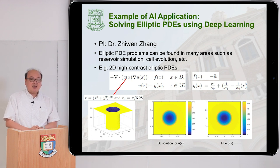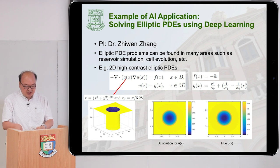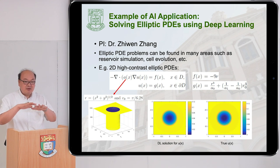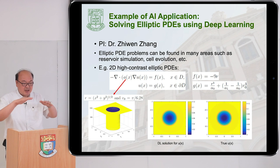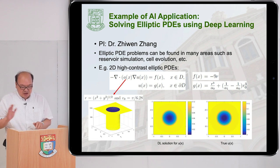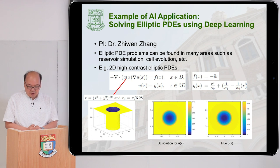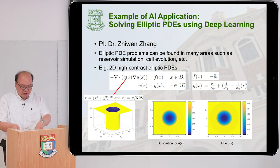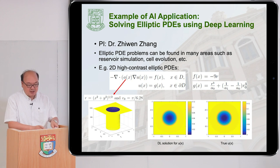This is an application of deep learning to solve elliptical partial differential equations. Elliptical PDE problems can be found in many areas such as reservoir simulation and soil erosion. The example shown is a 2D high-contrast elliptical PDE, where A is a very high-contrast function — a high value outside a circle but a very low value inside, creating a sudden jump across the circle. F and G are given continuous functions, and we want to find the solution U. The deep learning solution on the left closely replicates the true solution on the right — even under such drastic conditions, the result is very acceptable.